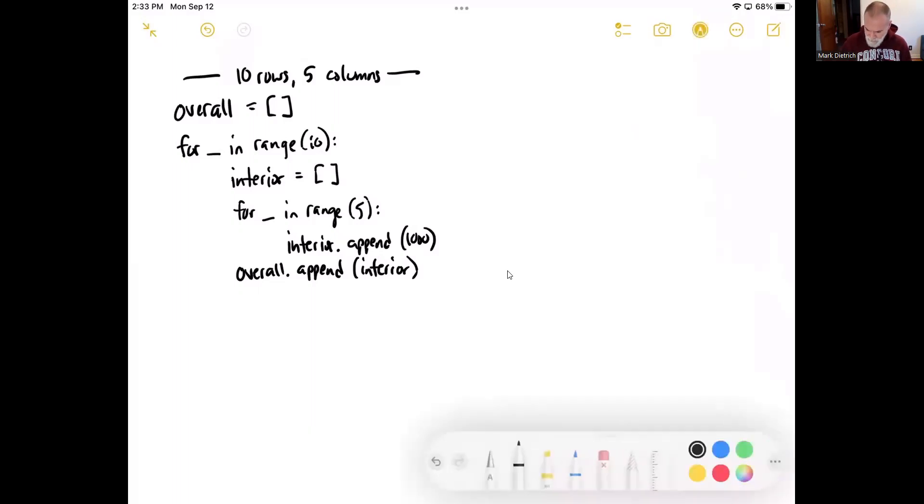First, I'm going to change my pen color here to blue to show. And this code right here will do exactly what we're wanting. It will build using for loops, two nested for loops, a list of lists, which is a two-dimensional list.